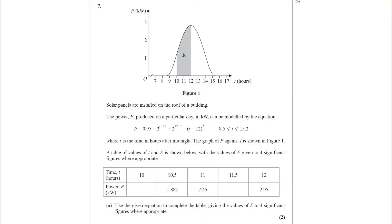Question number 7. Solar panels are installed on the roof of a building. The power P produced on a particular day in kilowatts can be modelled by a given equation, where T is the time in hours after midnight. Part A: use the given equation to complete the table, giving values of P to 4 significant figures. The question carries 2 marks.